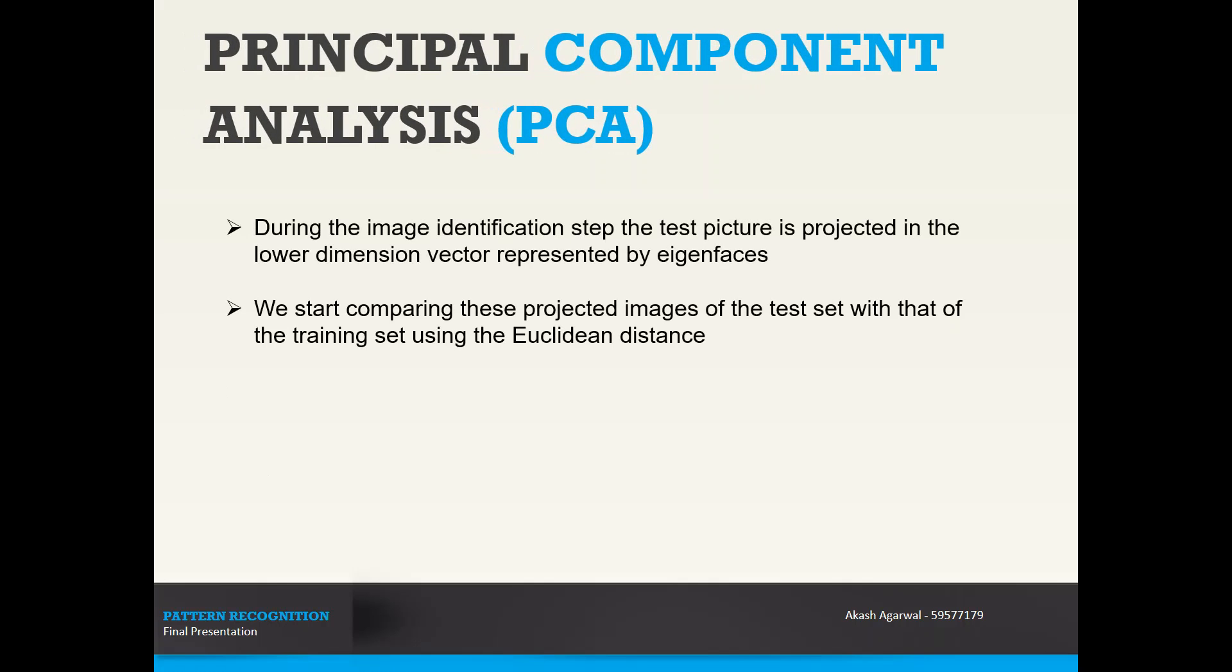In the next identification step, the test picture is projected in the lower dimension vector obtained from the principal component analysis. And then we compare these projected images of the test and the training sets by calculating the Euclidean distance between them. The one distance that is the closest to the test image is identified as a match and given back as the result.